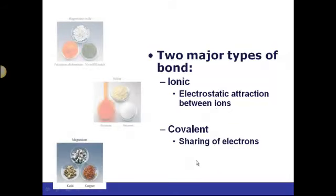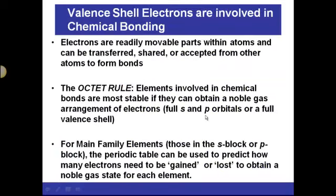Covalent bonds involve sharing of electrons rather than donating or accepting electrons. Only the valence shell electrons are involved in chemical bonding. The valence shell electrons are from the s or p orbitals in the outer shell of the atom. These electrons are the readily movable parts; the interior electrons cannot be used for bonding.